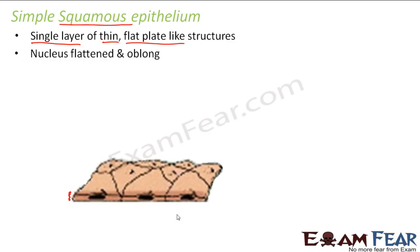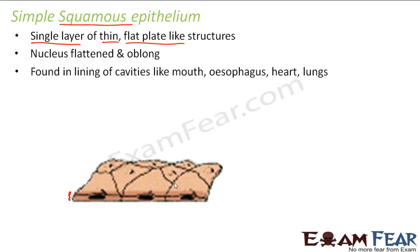Where do we find simple squamous epithelium? In this type, the nucleus is flattened and oblong. Generally, the nucleus in these epithelium cells is somewhat flattened because the cells are also flat and plate-like. Since the cells are flat, the nuclei are also to some extent flattened.